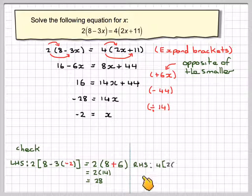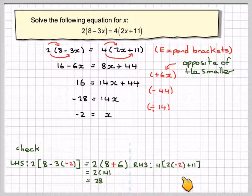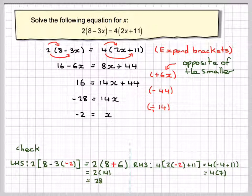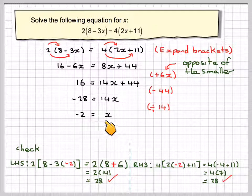On the right-hand side, I've got 4 brackets 2 times minus 2 plus 11. 2 times minus 2 is minus 4, so we're going to have 4 brackets minus 4 plus 11. Minus 4 plus 11 is 7, 4 times 7 is 28. And because I've got balance on both sides, this is now correct. I can consider my answer as correct.